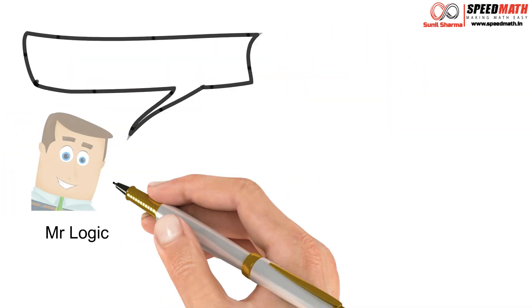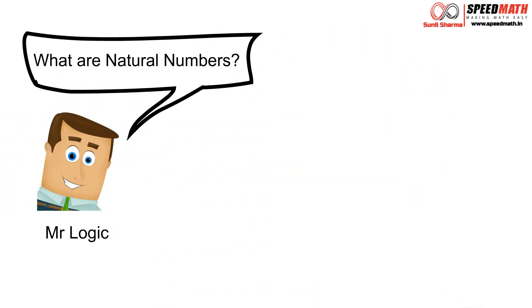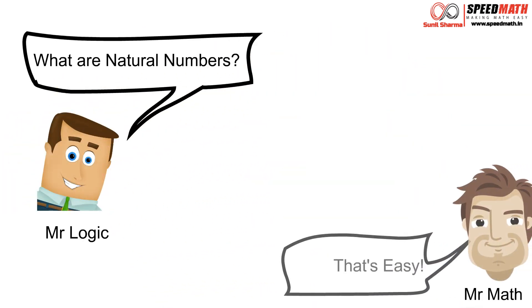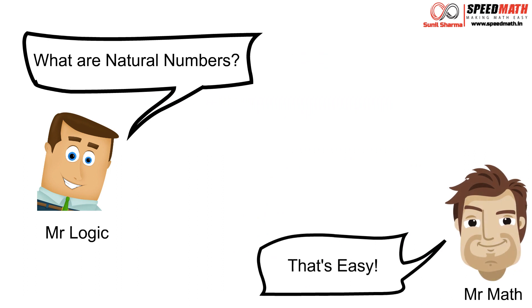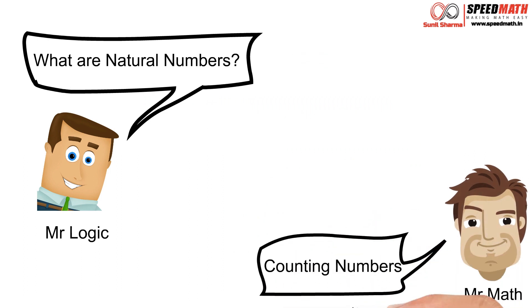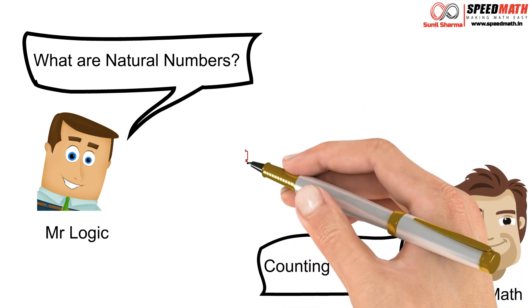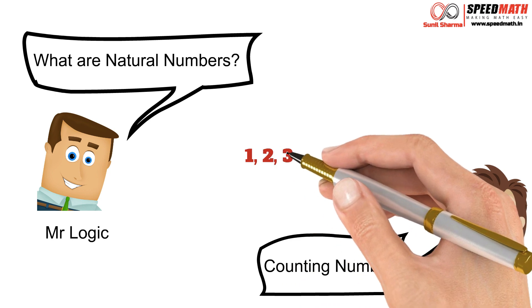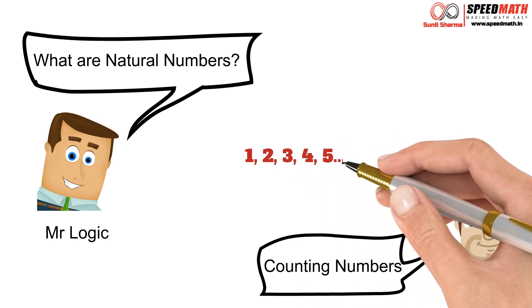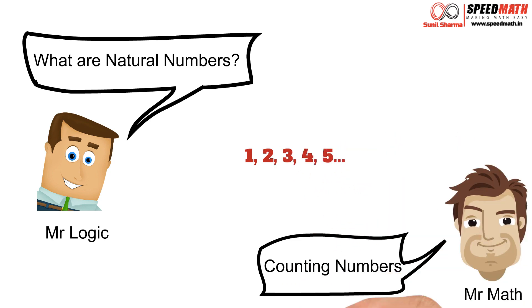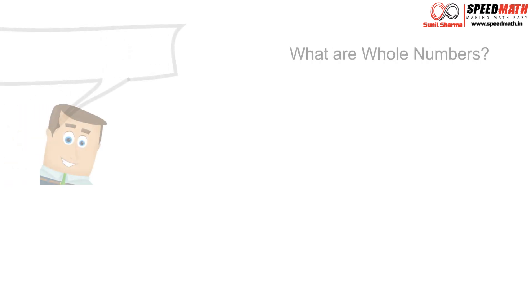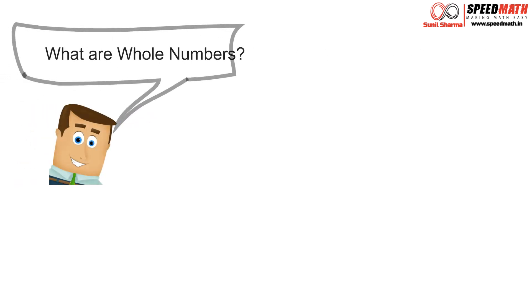Mr. Logic asks: what are natural numbers? Mr. Math says: that's easy — counting numbers are said to be natural numbers, that is numbers starting from 1, 2, 3, 4, 5 and so on are called natural numbers.